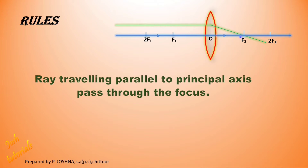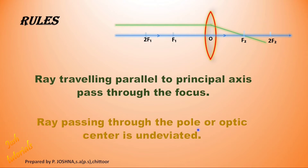Know the first rule carefully: a ray traveling parallel to the principal axis passes through the focus, and its vice versa — a ray passing through the focus will travel parallel to the principal axis. Also, a ray passing through the optic center is undeviated. Any ray passing through the optic center goes straight without any deviation.